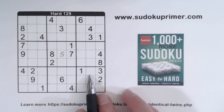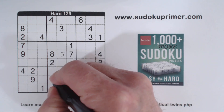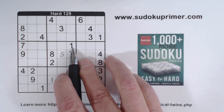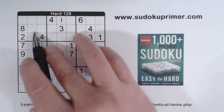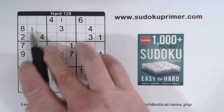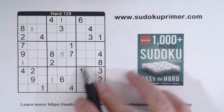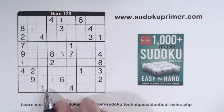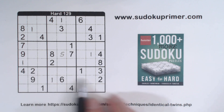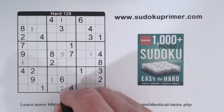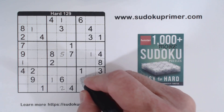Now I think we can fill in all our ones here. So that's a one, that's a one, one there, one there, one there, one there — and I think that's it. We've got all our ones. We can put a two in box eight here, and a four in box nine.